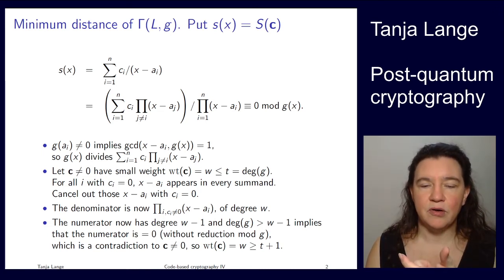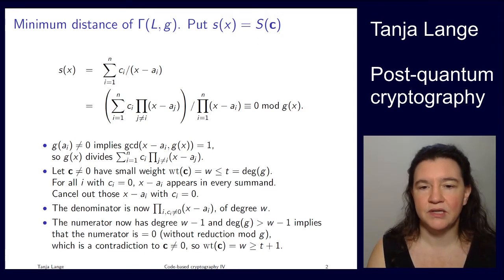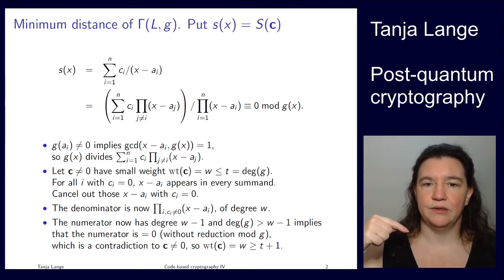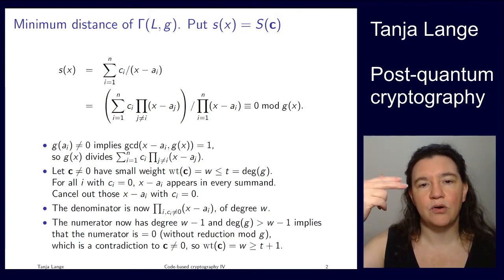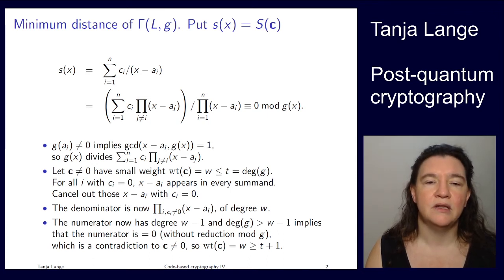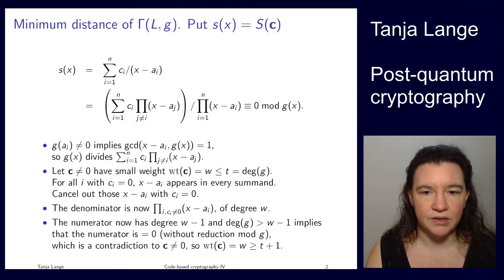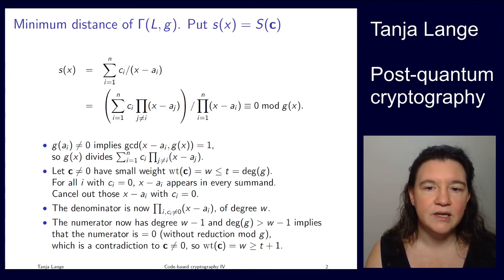It appears both in the numerator and the denominator, and in the numerator it appears in every summand. So we can shorten this whole thing to far fewer terms. What remains in the denominator are exactly those x minus a_i where c_i is 1. Since c has weight w, the denominator now has degree w. The numerator always has degree one less than the denominator, and since it's a monic polynomial there will be no cancellation on the top term, so the numerator has exactly degree w minus 1.